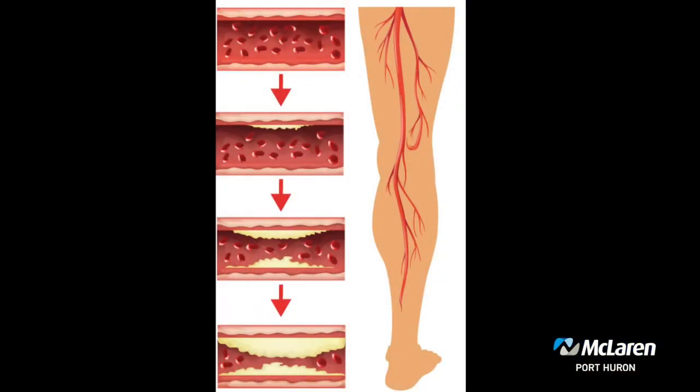Let's start with peripheral artery disease, sometimes referred to as PAD. Can you explain what that is? It's the hardening of the arteries, or atherosclerotic disease. It's caused when the artery wall gets injured over time by toxins — whether from smoking, high blood pressure, high cholesterol, or diabetes — that cause plaque to build up in the arteries.